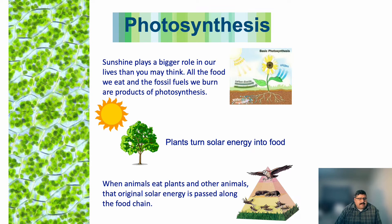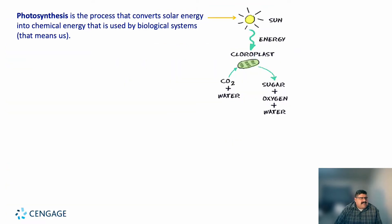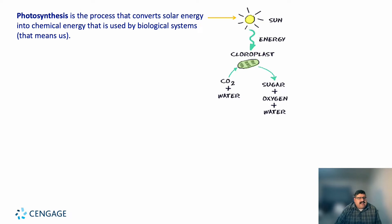Photosynthesis is the process that converts solar energy into chemical energy used by all biological systems. In plant cells, we have chloroplasts which convert water and carbon dioxide into sugar, oxygen, and water. The word sugar is interchangeable with glucose — the glucose molecule, C6H12O6 — which, if you recall from cellular respiration, is what drives cellular respiration.